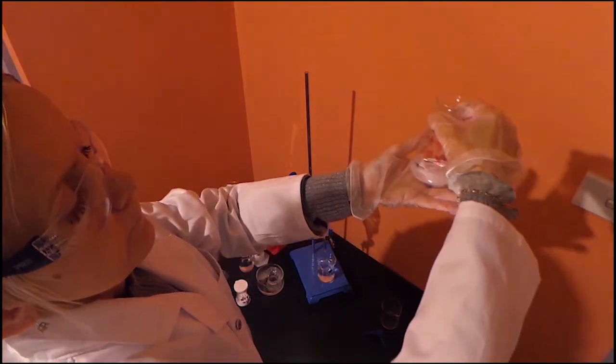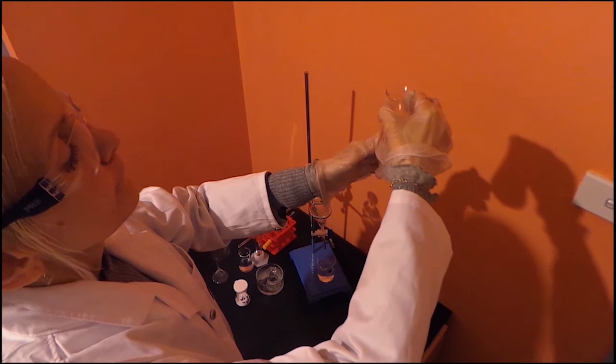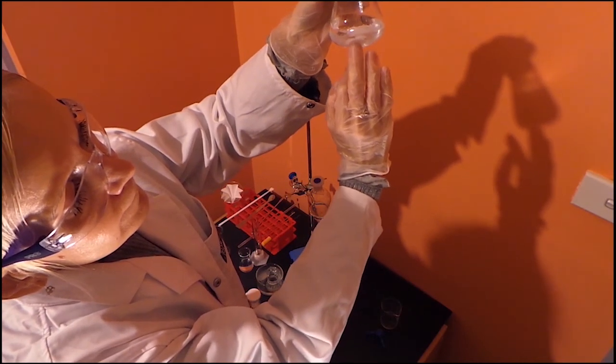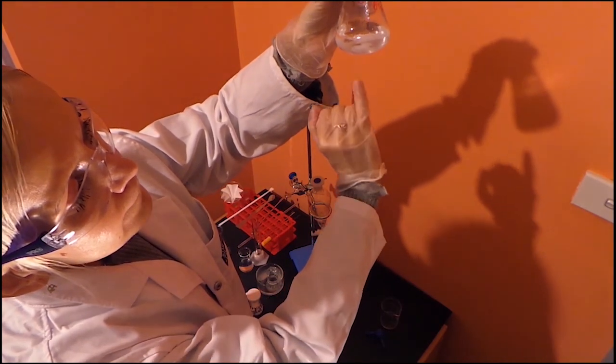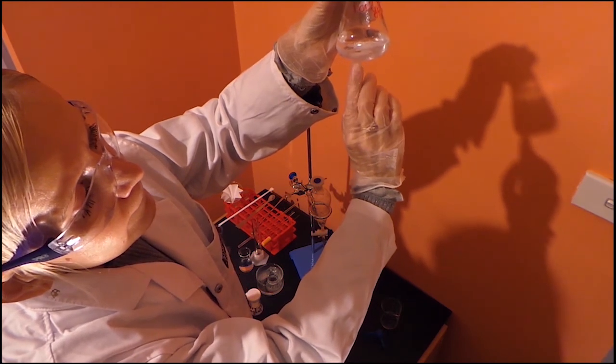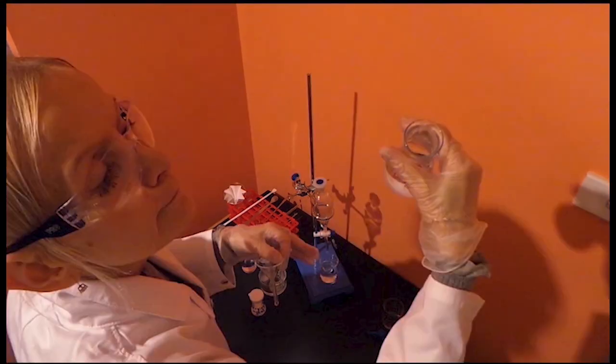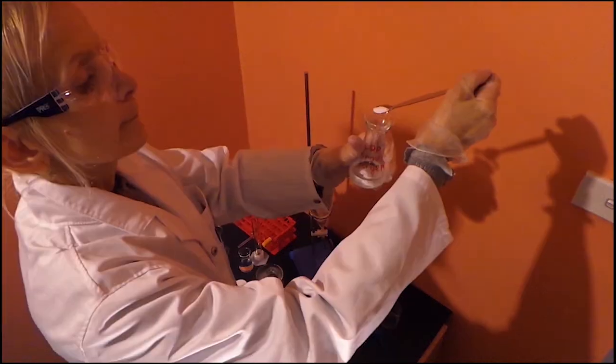After adding a small amount, swirl the mixture in the flask. We can see the sodium sulfate clumps together sticking to the bottom of the flask. Since the majority of the sodium sulfate has clumped, we need to add a bit more.